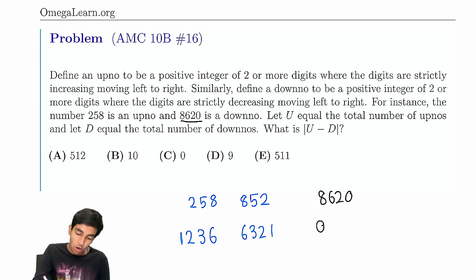And just so you know, this is not 268 because we already counted 268 earlier. 268 would have its own downno, 862. So this is an example 8620 of a number that is a downno, but when you reverse its digits, it's not an upno.